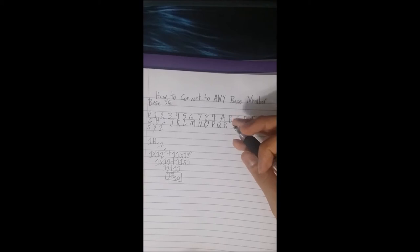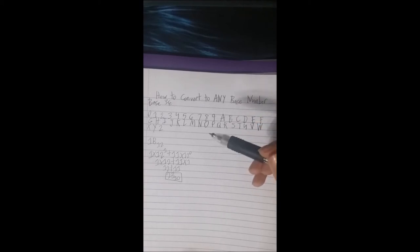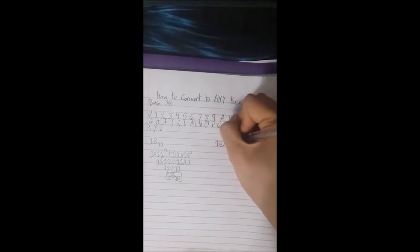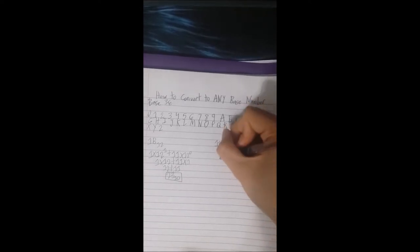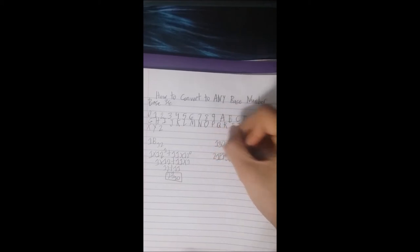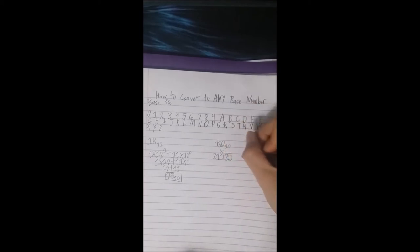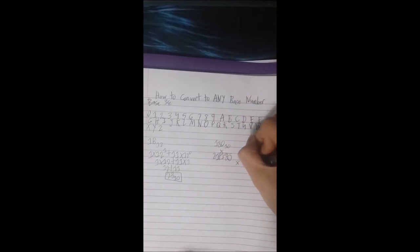Now what about we do vice versa? So what about we convert from decimal to base 21? We'll put 180. For this, if you want to convert from decimal to any base number, you basically divide. So to avoid confusion, whenever you're trying to convert to decimal use the expand strategy. When converting from decimal to another base, use division. You divide by their base number. So since we're converting to base 21, you divide by 21. And I went over this in a different video about the division.